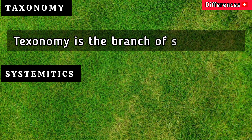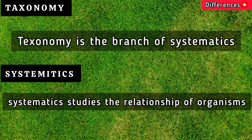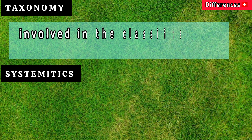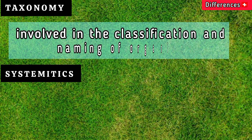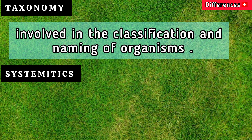Taxonomy is the branch of systematics, while systematics studies the relationship of organisms. Taxonomy is involved in the classification and naming of organisms.